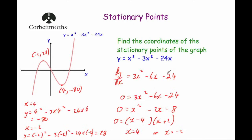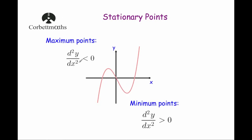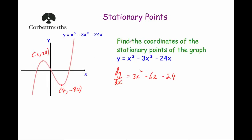Now we're going to look at how to use the second derivative to show whether a stationary point is a maximum or minimum. For maximum turning points the second derivative d²y/dx² will be less than zero, and for minimum turning points the second derivative is greater than zero. Let's look at our last example again: the cubic graph with maximum turning point at (−2, 28) and minimum turning point at (4, −80).